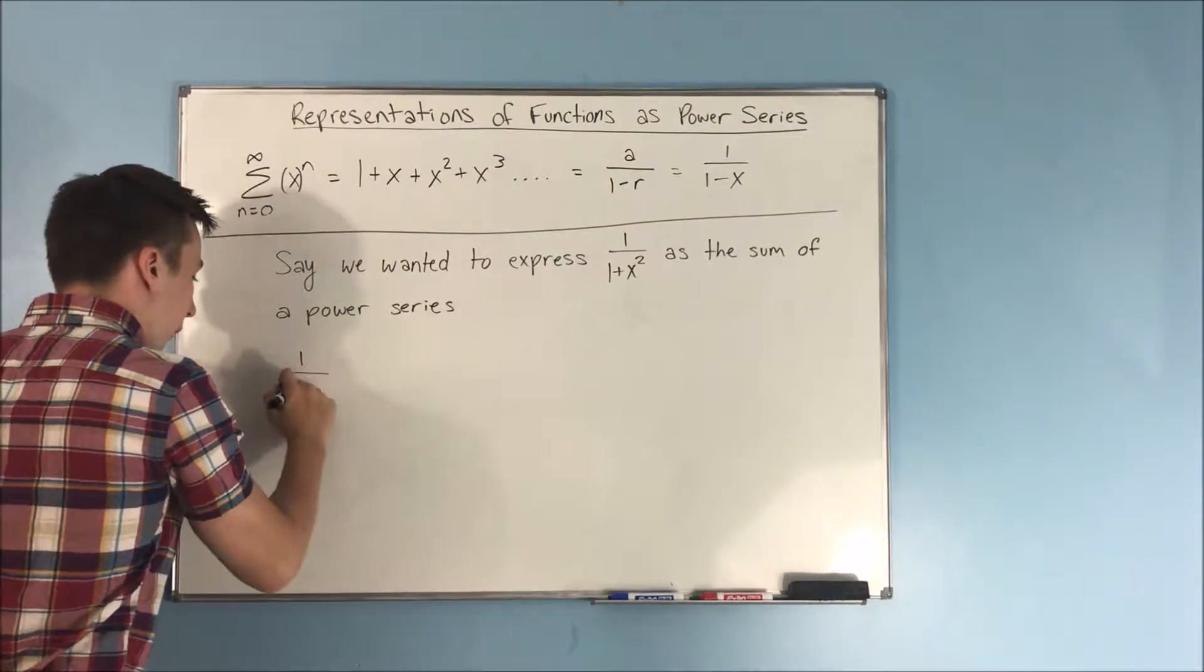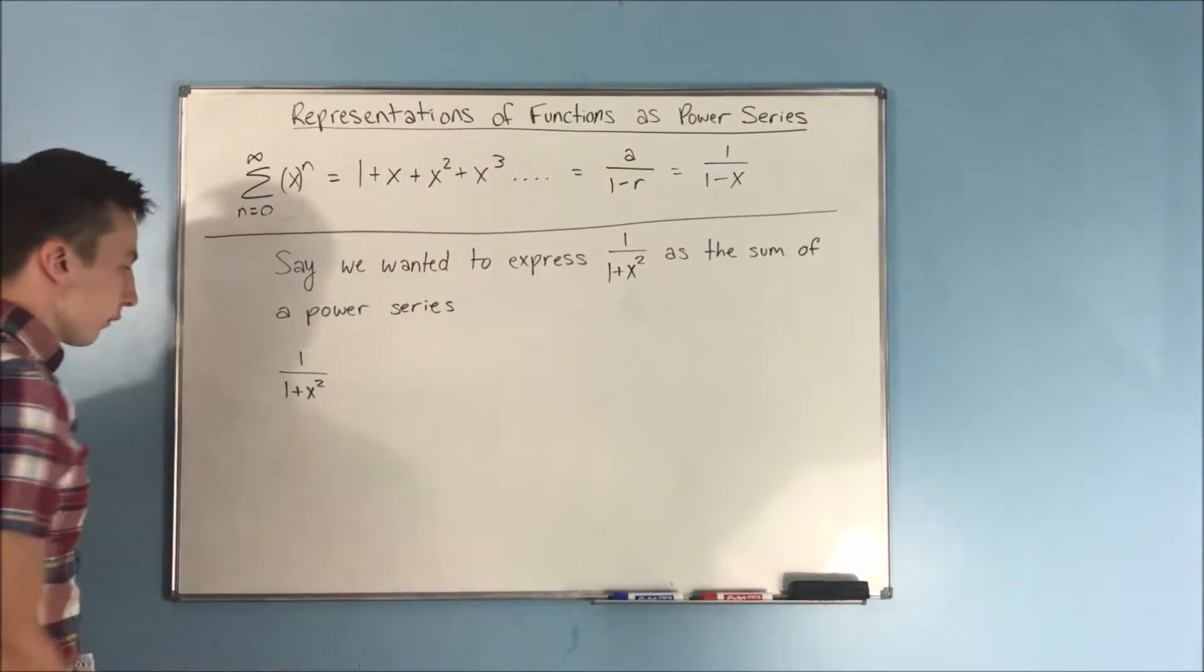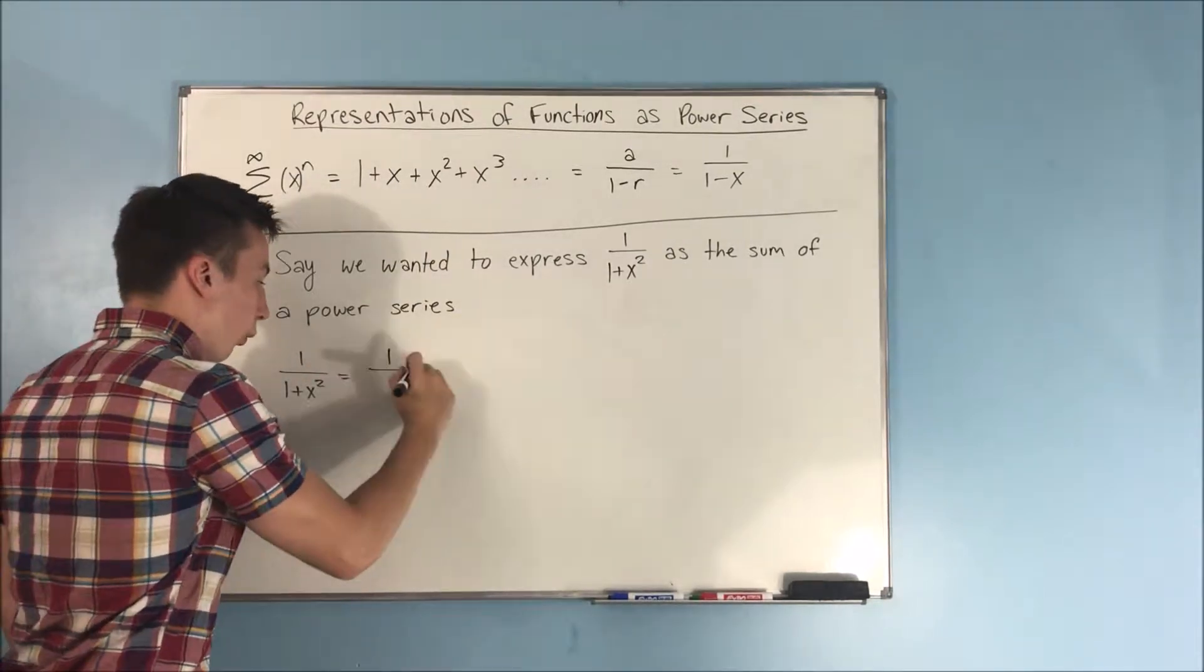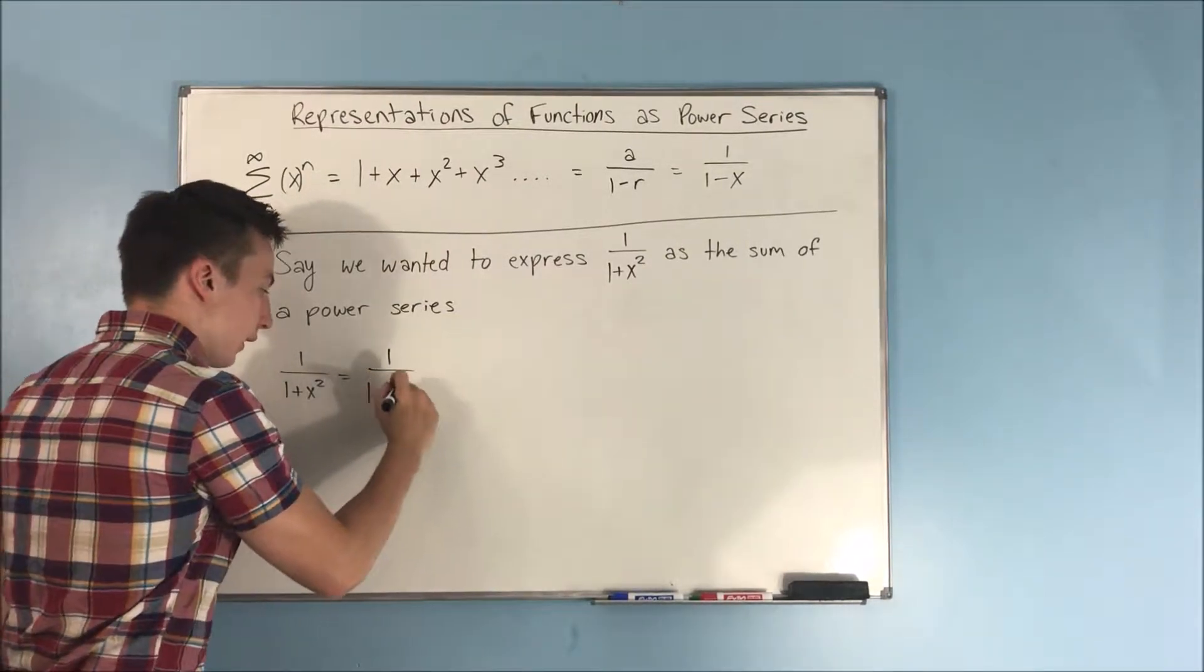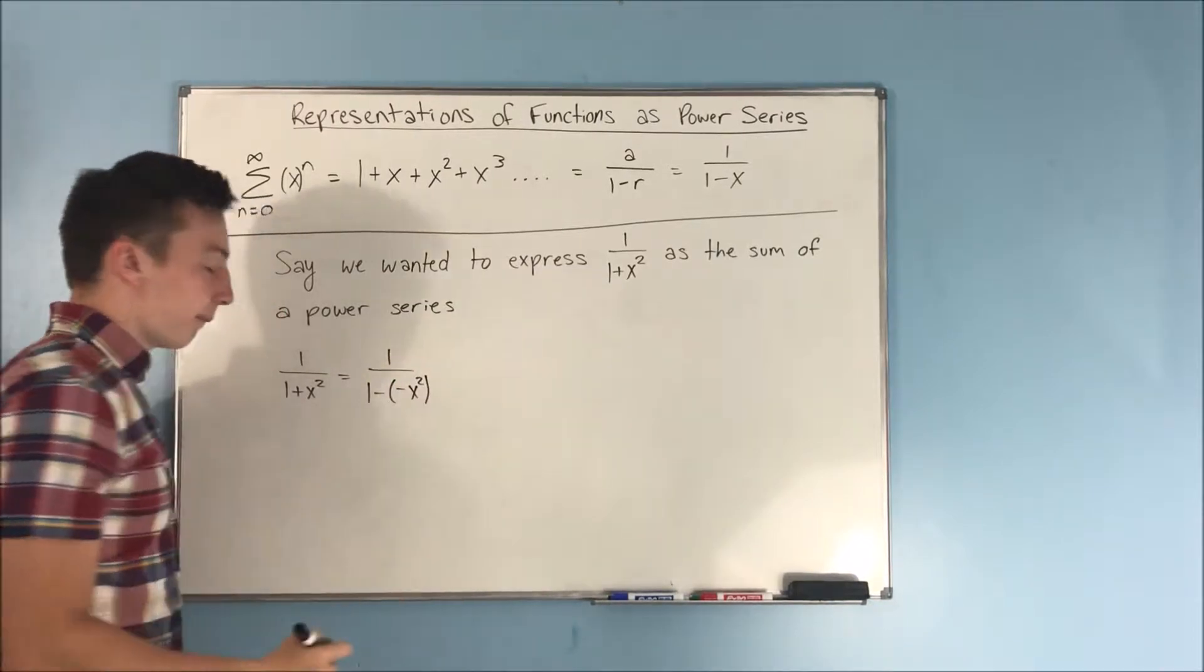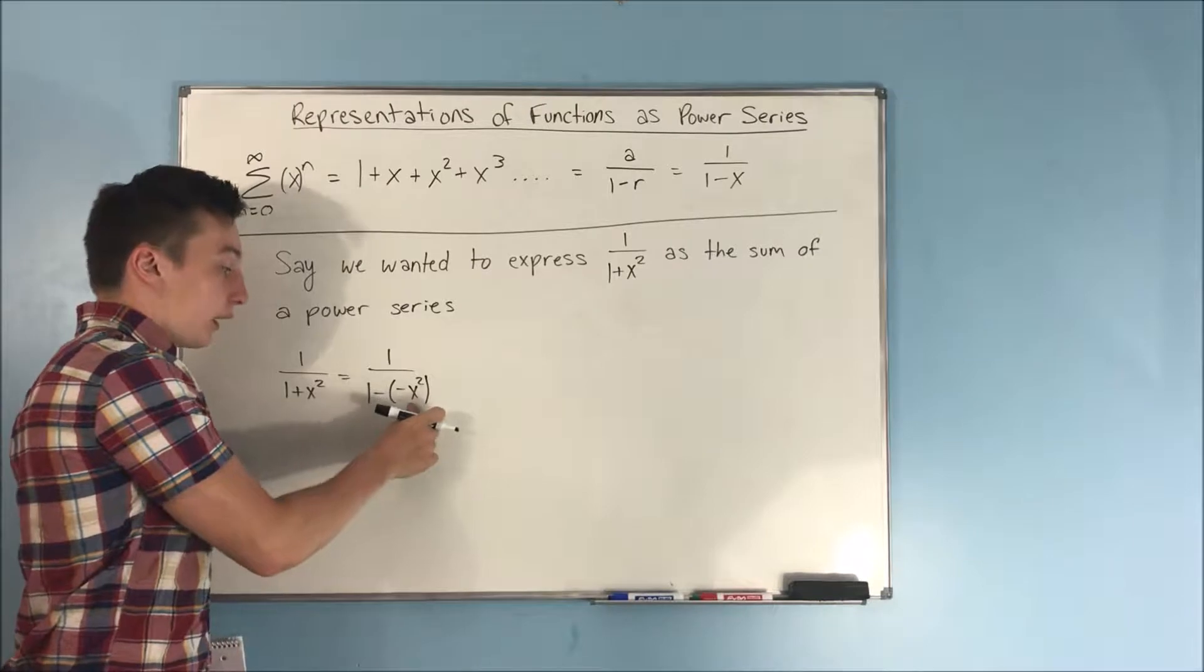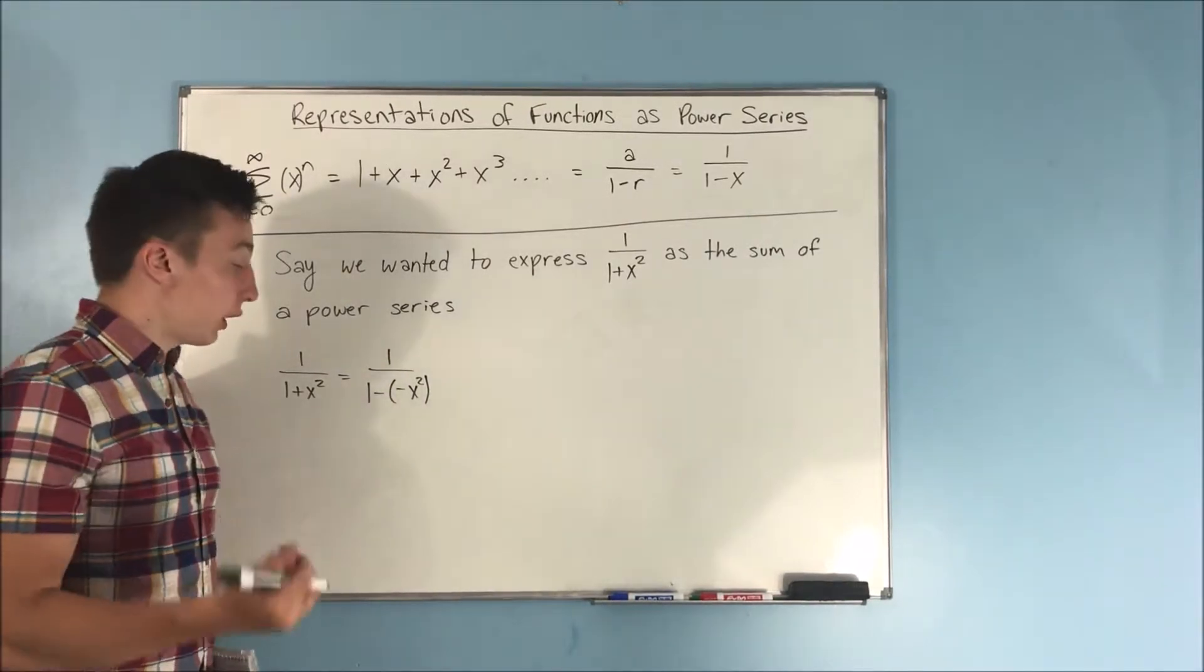We start off with 1 over 1 plus x squared. Now we can rewrite this as a 1 over 1 minus a negative x squared. Now we have that 1 over 1 minus something. That something being negative x squared.